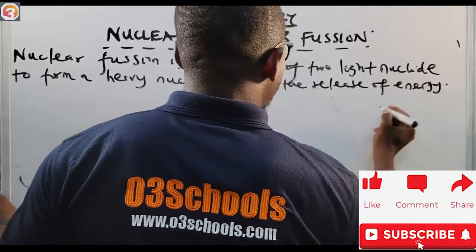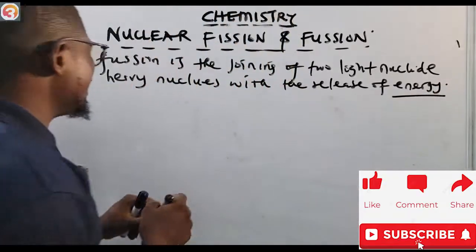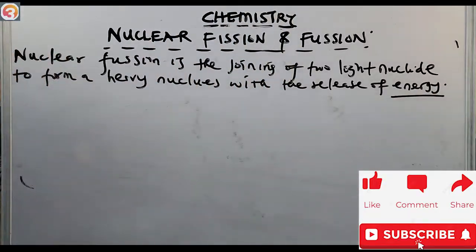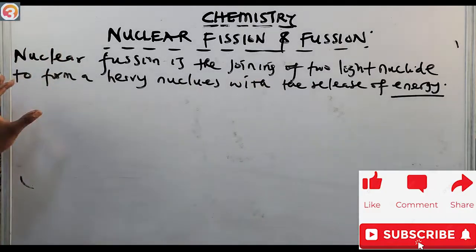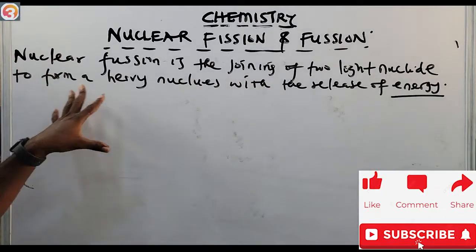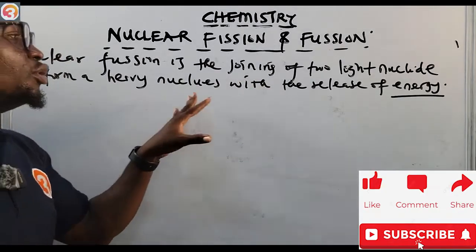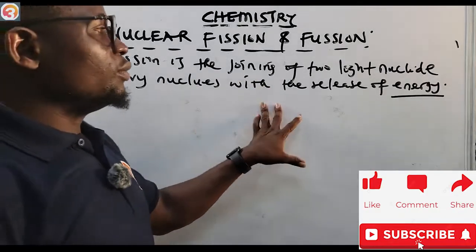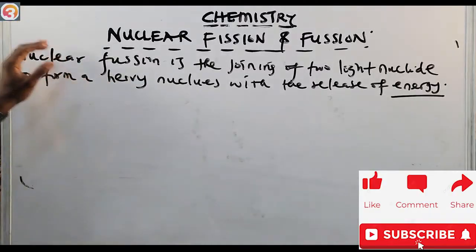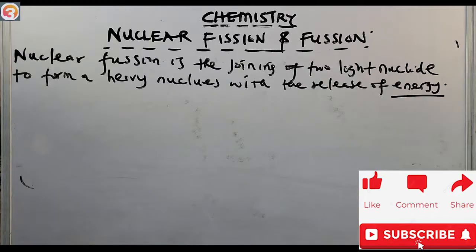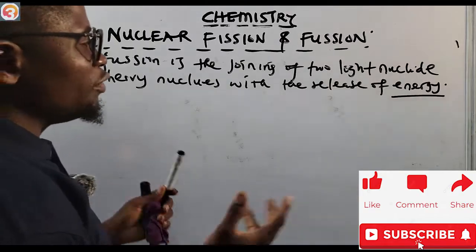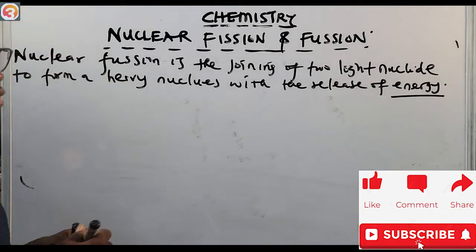Energy is always released in nuclear fusion. An example of nuclear fusion is the fusion of deuterium and tritium to give us a helium nucleus. The isotopes of hydrogen are: protium (ordinary hydrogen), deuterium, and tritium. The fusion of deuterium and tritium gives us a helium nucleus.